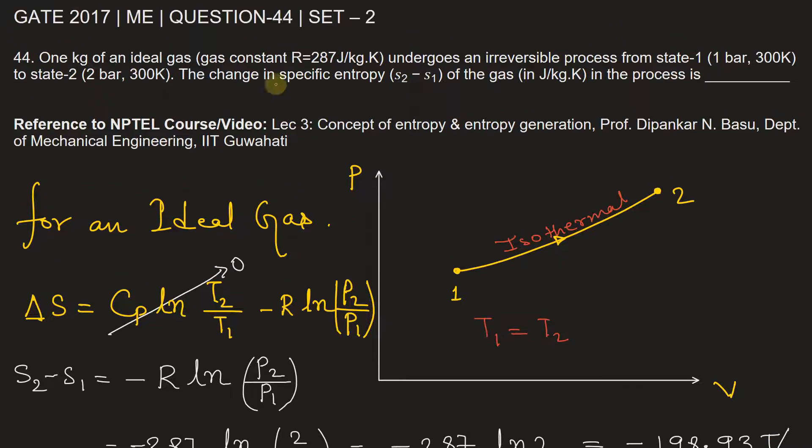Therefore, the change in specific entropy in joules per kg Kelvin will be minus 198.93.